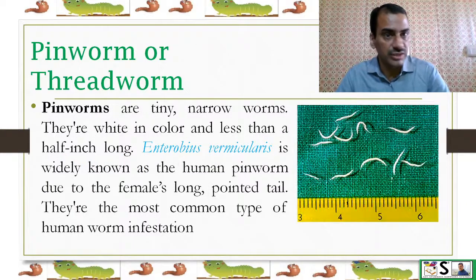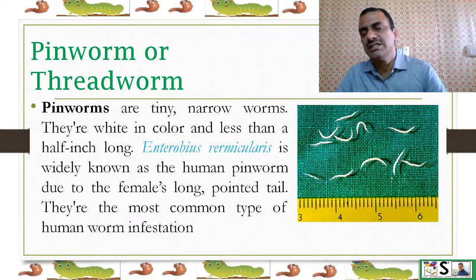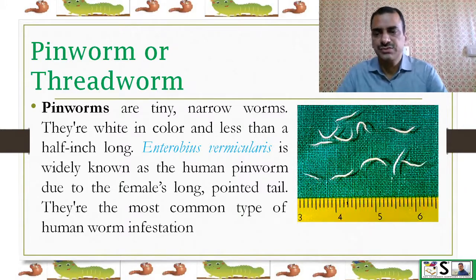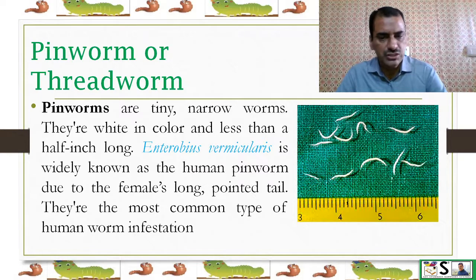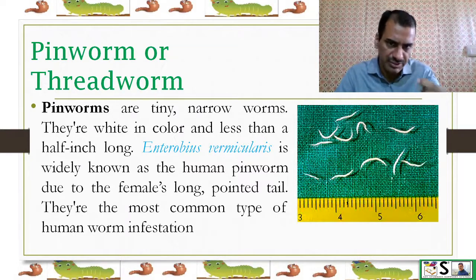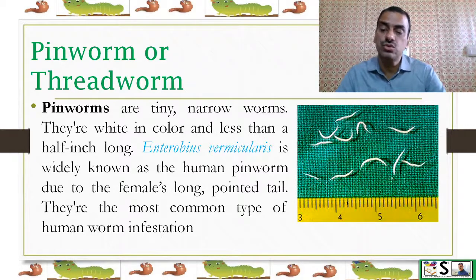Pinworm or threadworm: Pinworms are tiny, narrow, white worms less than half a centimeter long. Enterobius vermicularis is widely known as the human pinworm. Due to the female's long, pointed tail, they are commonly known as pinworm — it is sharp like a pin. This is the most common type of worm infestation in human beings.